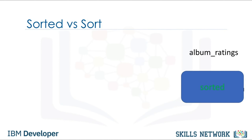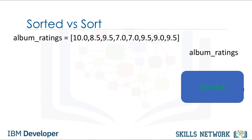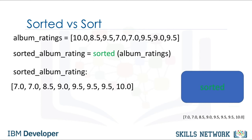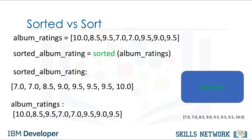The function sorted returns a new sorted list or tuple. We can apply the function sorted to the list album_ratings and get a new sorted list sorted_album_rating. The result is a new sorted list. If we look at the list album_ratings, nothing has changed. Generally, functions take an input — in this case a list — and produce a new output, in this instance a sorted list.